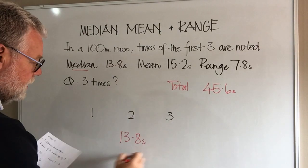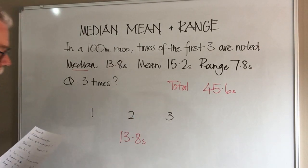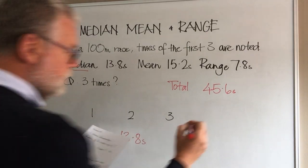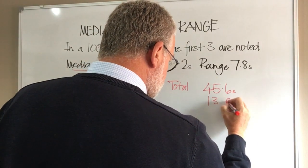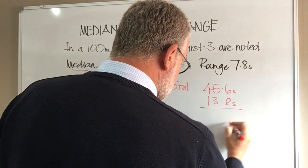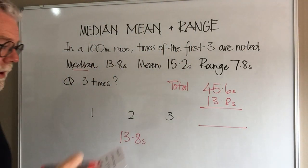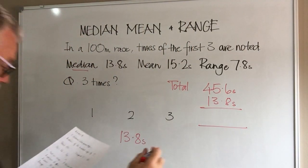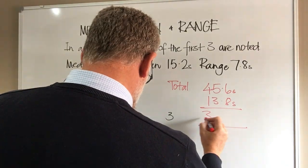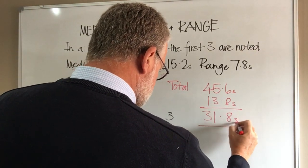Now we know that the median, one of the runners, was 13.8 seconds. If we take 13.8 away from our total, it gives us the time of the other two runners. That's 31.8 seconds.